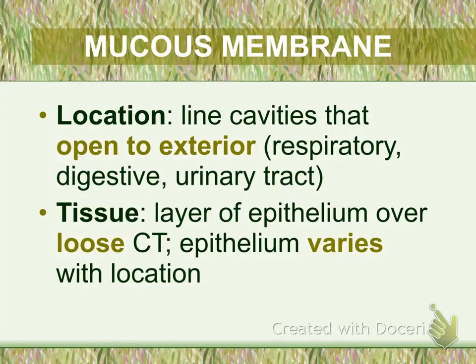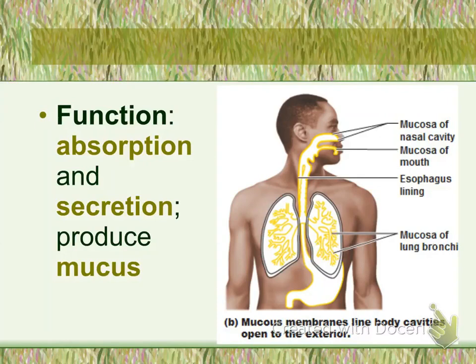The second type of epithelial membrane is the mucous membrane. They are found lining cavities that are open to the exterior, meaning you can get to this area without cutting into the body. These membranes are found in areas such as the respiratory, digestive, and urinary tract. The tissue type varies by location: the respiratory tract is lined with ciliated pseudo-stratified columnar epithelium, the digestive tract is lined with simple columnar epithelium, and the urinary tract is lined with transitional epithelium. The underlying connective tissue is loose connective tissue.